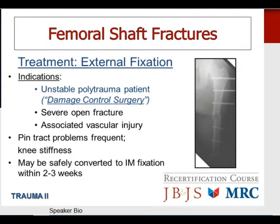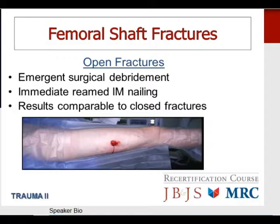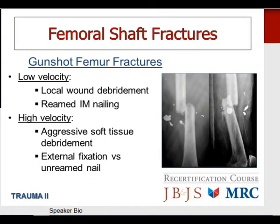For gunshot femur fractures, if it is a low velocity handgun injury, local wound debridement is performed followed by reamed nailing as for a closed fracture. If it is a higher velocity gunshot fracture, aggressive soft tissue debridement is required, and fixation options would be either external fixation or an unreamed nail as dictated by the soft tissue injury.